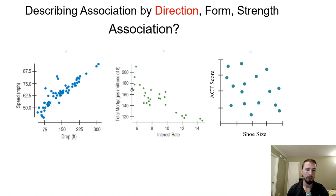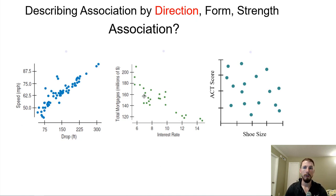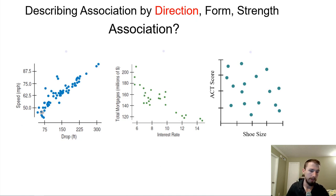So we're going to now deal with bivariate data. Instead of graphing one variable across the bottom, we're graphing two variables at the same time — just like plotting a point where you have an x and y-axis. We now have an x and y-axis for our two variables, kind of like our contingency tables for categorical data. But now we have two quantitative variables, like drop in feet and speed in miles per hour for roller coasters.